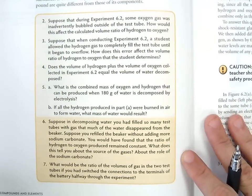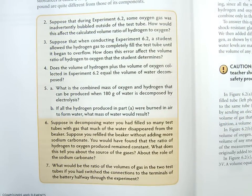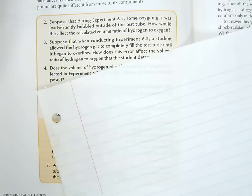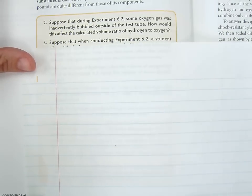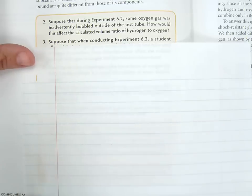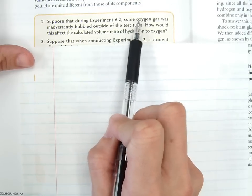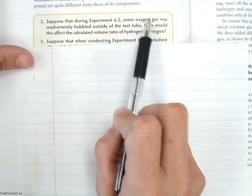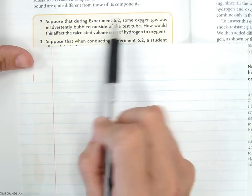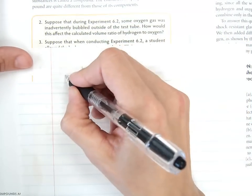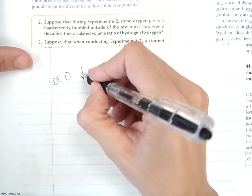Number two. Suppose that during Experiment 6.2, some oxygen gas was inadvertently bubbled out of the test tube. How would this affect the calculated volume ratio of hydrogen to oxygen? This is one where I have to draw a little timeline of how different things are affected. If some of the oxygen gas was inadvertently bubbled outside the test tube, that means some of the volume of oxygen was not collected, so the volume of oxygen collected would be less than what it should be.